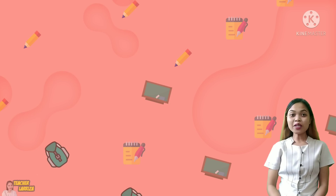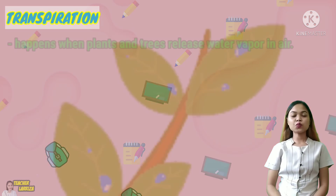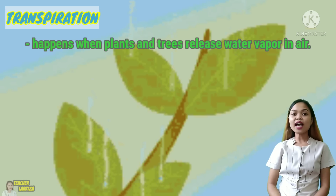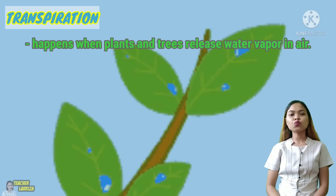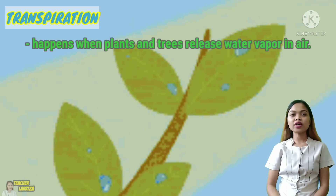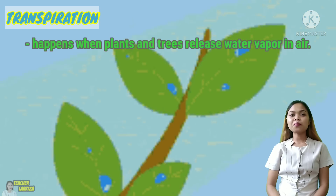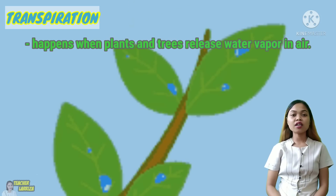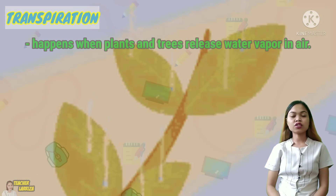Alongside this process is what we call transpiration. Plants and animals use and reuse water and release water vapor into the air. When trees and plants release water into the air, transpiration occurs.